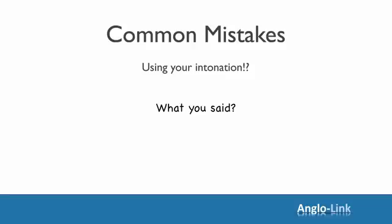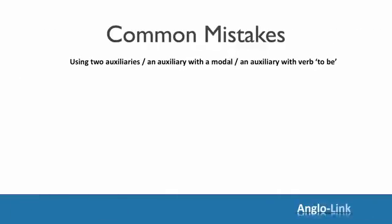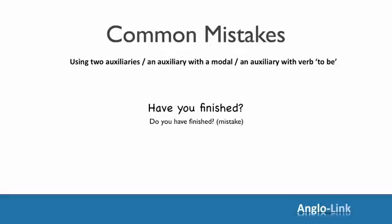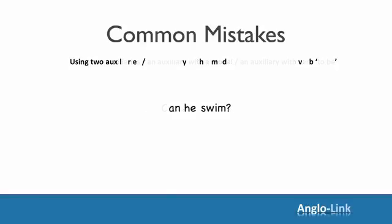Let's look at another common one. 'What you said?' — doesn't sound good at all. Use the auxiliary: What did you say? Another common mistake is using two auxiliaries, or an auxiliary with a modal verb, or with the verb to be. For example, 'Do you have finished?' — this is the present perfect, a tense where we can see the auxiliary 'have,' so there's no need for another auxiliary. Simply: Have you finished? Or 'Does he can swim?' — the modal verb makes the question itself, no need to use another auxiliary. Simply: Can he swim?